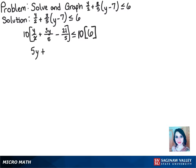Same thing for the 3y over 5. Five goes into 10 twice, so that 5 cancels and we have 2 times 3y, which is 6y minus, and then 2 times negative 21, which gives us negative 42 is less than or equal to 60.